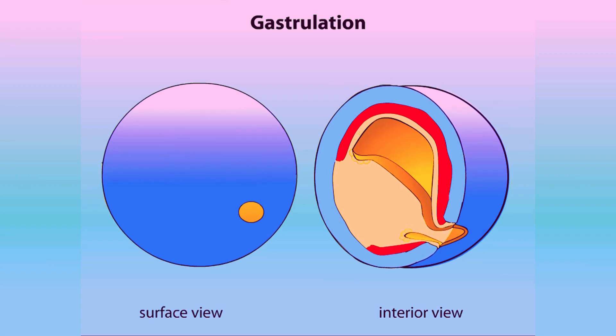By the end of gastrulation, the ectoderm has surrounded the embryo, endoderm lines the inside, and mesoderm lies between the two. Additionally, the fates of specific regions have become determined.